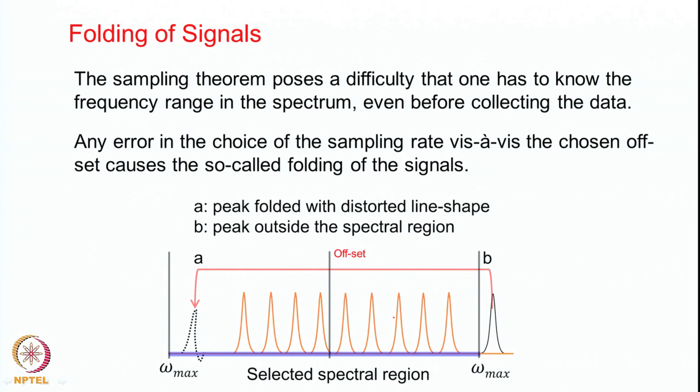The sampling theorem tells us that the sampling rate should be equal to 2 times omega max, where omega max is the maximum frequency in your spectrum. The sampling theorem therefore poses a difficulty: one has to know the frequency range in the spectrum even before collecting the data. Where to place the offset, what is the spectral range, and what is the maximum frequency with respect to the offset — all this is something one has to know. However, this is not easy to know.